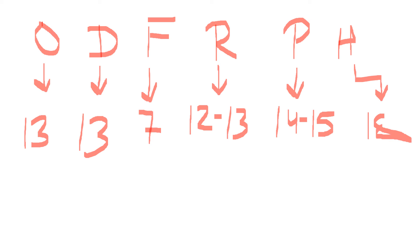Using this trick, the thoracic vertebrae numbers are: ox 13, dog 13, fowl 7, rabbit 12 to 13, pig 14 to 15, and horse 18. Additionally, remember that in any animal, the number of thoracic vertebrae equals the number of rib pairs. So if you are asked how many ribs a horse has, the answer is 18 pairs or 36 ribs total.